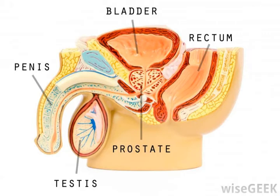Though they have a head and a tail, the spermatozoa will not yet be fully mature. They will be moved to the epididymis tube, where they essentially learn to swim and gather strength to penetrate a female egg. After two weeks, they are finally stored in the vas deferens, where they'll be mixed with milky fluid from the prostate before ejaculation.